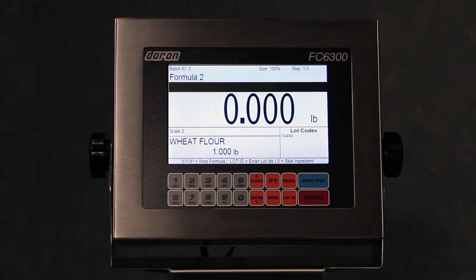The front of the FC6300 weight indicator has a really big bright LCD display with very easy to read characters, really crisp and really sharp letters and numbers.